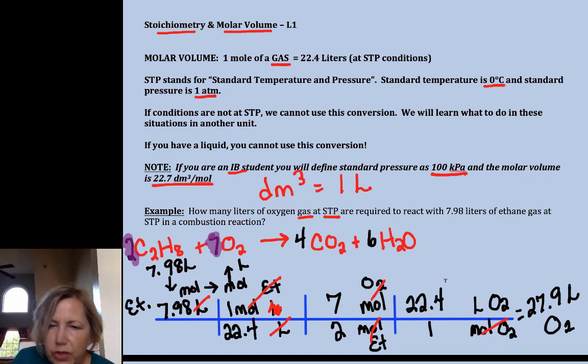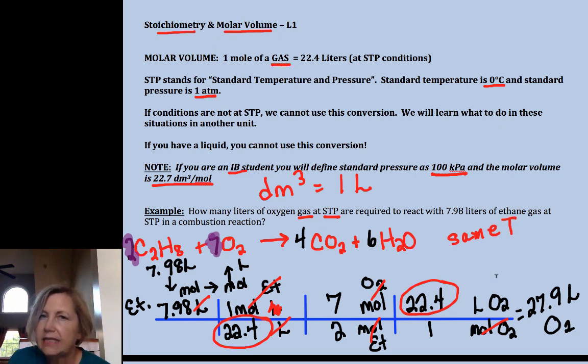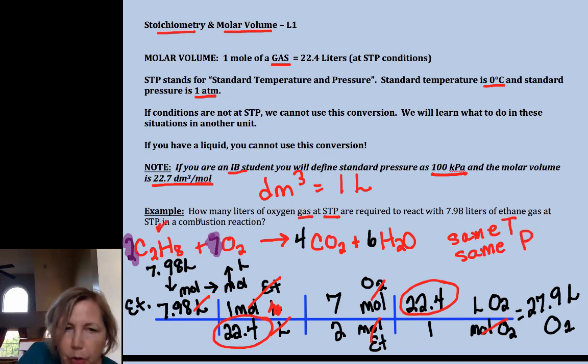The other thing I want you to notice is if we're going volume to volume and we have the same temperature, in this case STP, the same pressure, as long as that's the same for both substances, the only thing you really need is your magic mole ratio. And we'll see an application of this in other videos. But that 22.4 cancels, and so we get 27.9 liters for that.